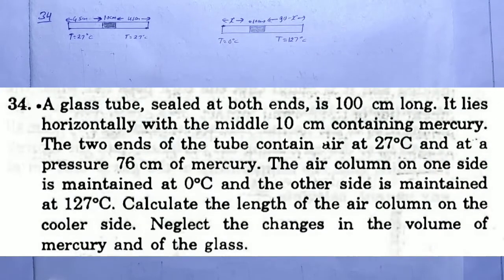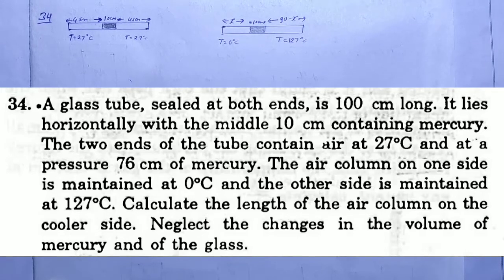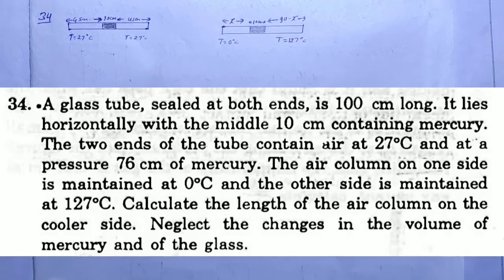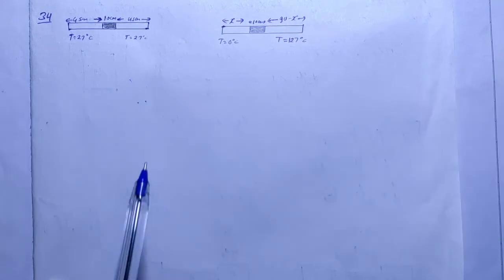Asimov solution chapter 24, kinetic theory of gas, question number 34. A glass tube sealed at both ends is 100 centimeter long. It lies horizontally with a middle 10 centimeter lock containing mercury. The two ends of the tube contain air at 27 degrees Celsius at pressure 76 cm of mercury. The air column on one side is maintained at 0 degrees Celsius and the other side is maintained at 127 degrees Celsius. Calculate the length of the air column on the cooler side. Neglect the change in the volume of the mercury and of the glass.